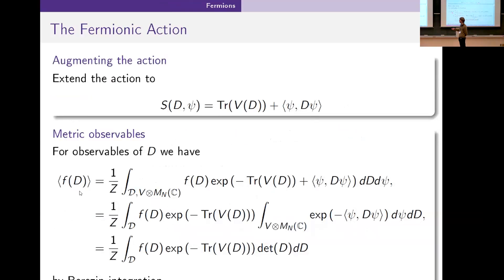Largely because if we restrict to just observables in terms of D, what we can do is we can integrate out this fermionic action and it just gives us the determinant of D as a Grassmann integral.